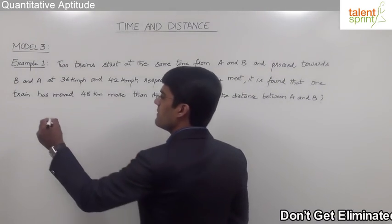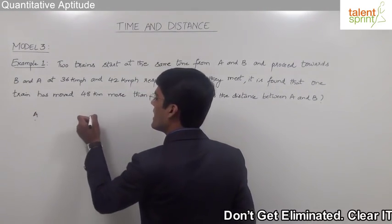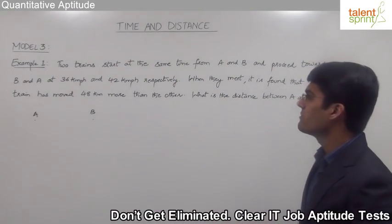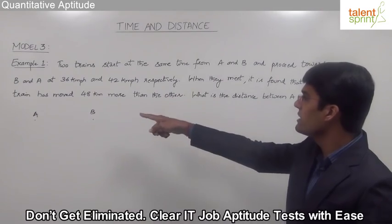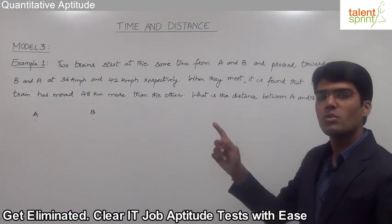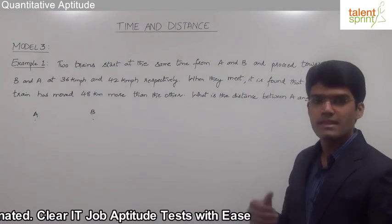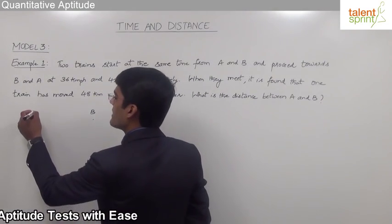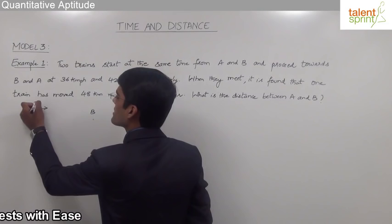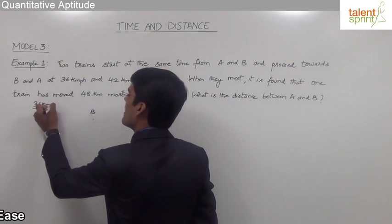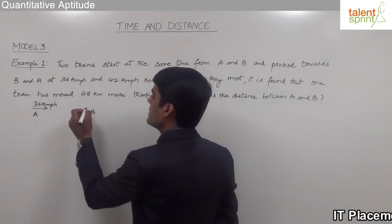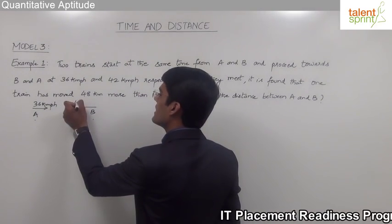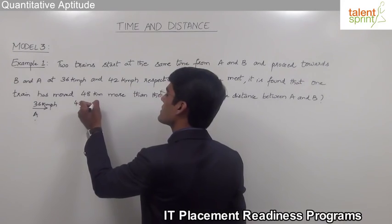As given in the question, there are two points — point A and point B, or we can say station A and station B. Two trains start at the same time from these two stations and proceed towards each other at 36 and 42 km per hour respectively. One train starts at 36 km per hour from station A and moves towards station B. At the same time, the other train starts from station B and moves towards station A at 42 km per hour.